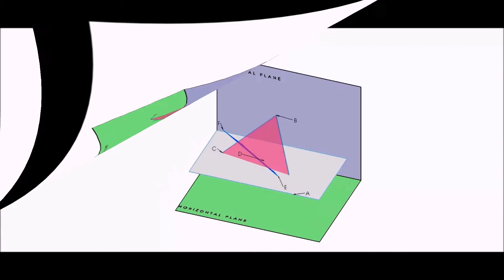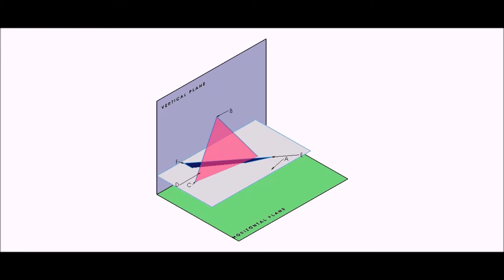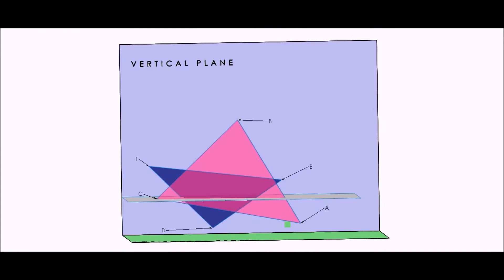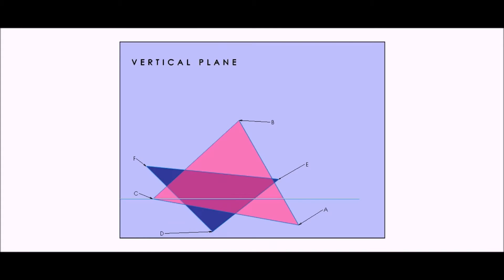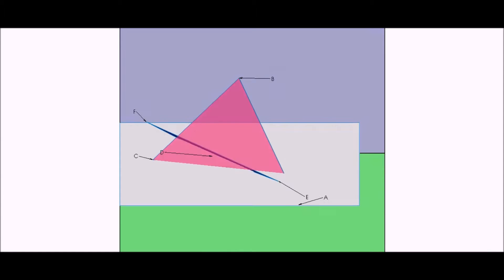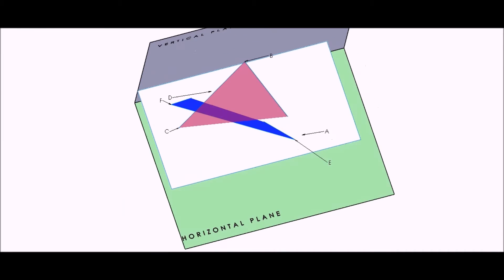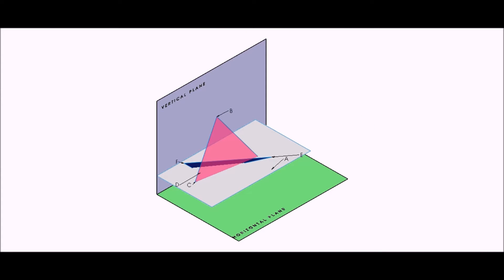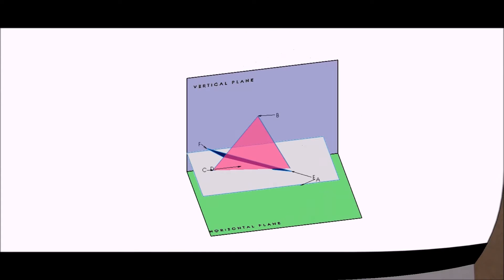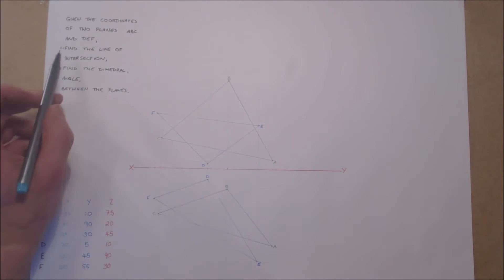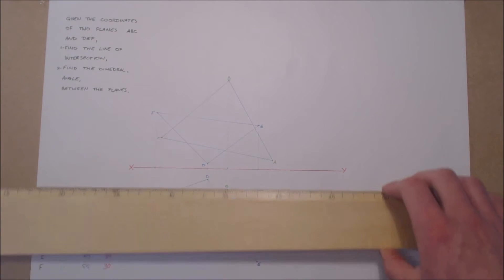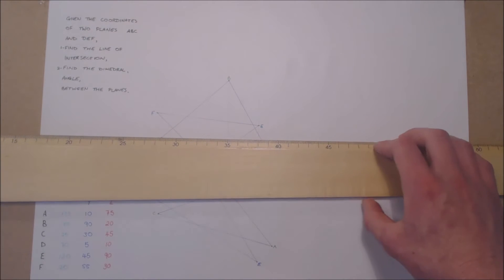Using cutting planes from a point already given, we will be able to find a point on the line of intersection. In the SOLIDWORKS model we have a horizontal cutting plane from point C. Where this cutting plane cuts the plane ABC and DEF will give us a point on the line of intersection in plan.